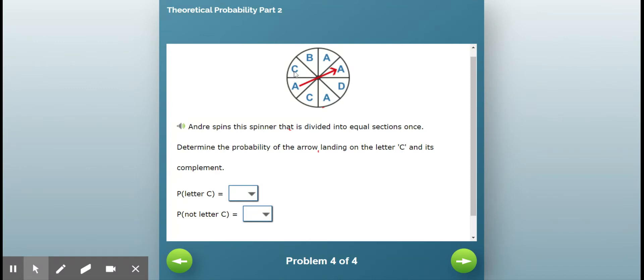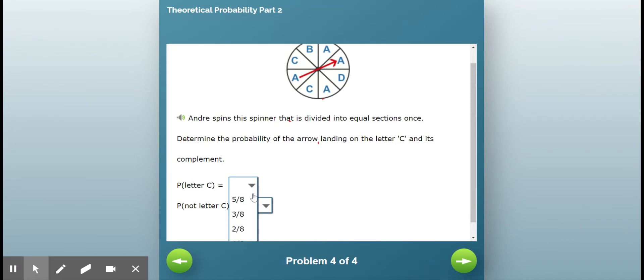So two C's out of one, two, three, four, five, six, seven, eight total. So it's two out of eight.